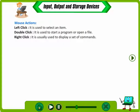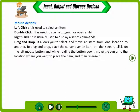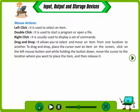Mouse actions: Left click is used to select an item. Double click is used to start a program or open a file. Right click is usually used to display a set of commands. Drag and drop allows you to select and move an item from one location to another. To drag and drop, place the cursor over an item on the screen, click on the left mouse button and while holding the button down, move the cursor to the desired location and then release it.